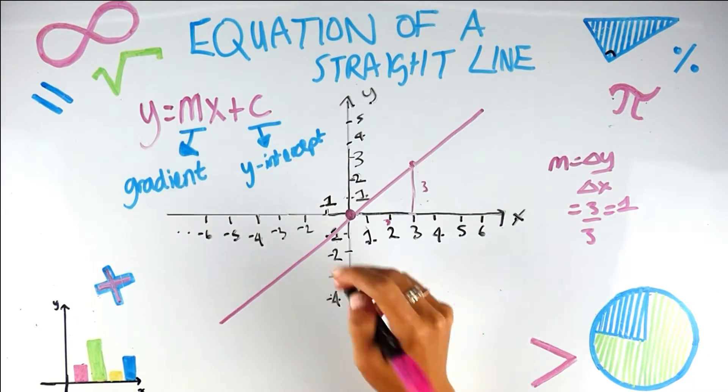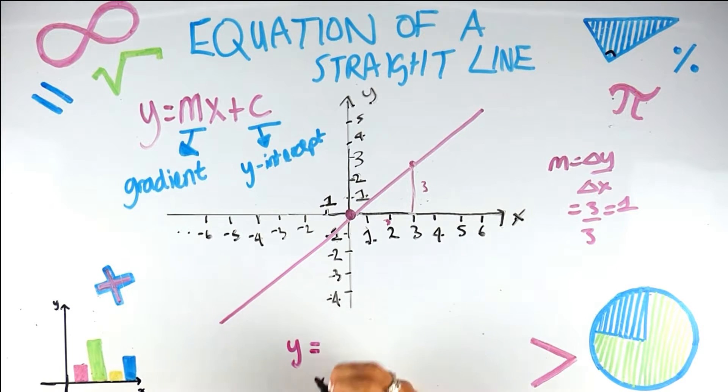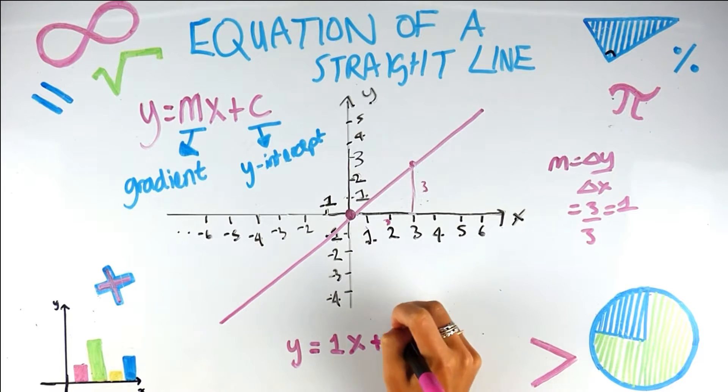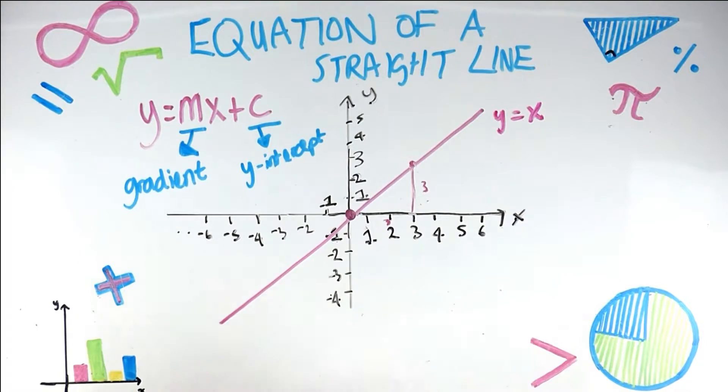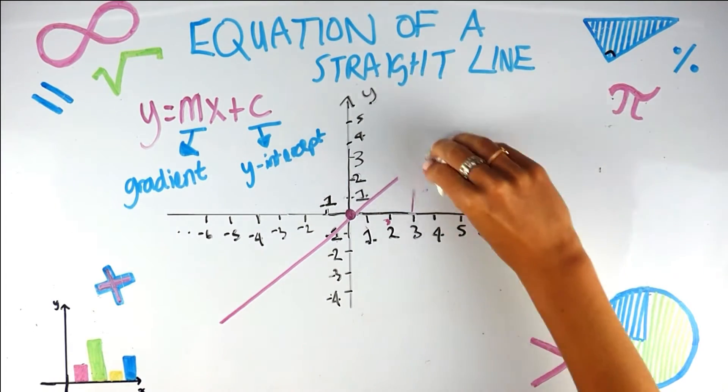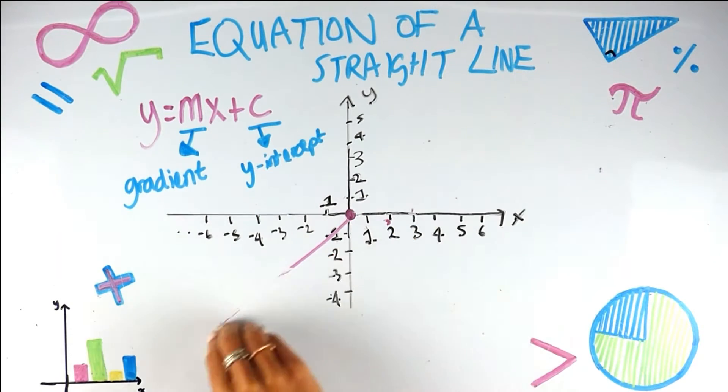So if we put this back into this formula, we know that y equals m, which is the gradient, which is 1, x, the y and the x don't change, plus the intercept, which is 0. Looks funny, don't like it at all, technically it's correct, but this is y equals x. I've just shown that that is y equals x, which we all kind of knew already, so it's just nice to put that to an example that's well known.